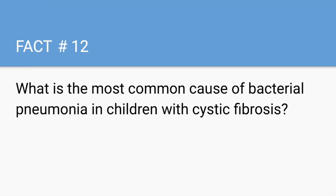What is the most common cause of bacterial pneumonia in children with cystic fibrosis? Cystic fibrosis is highly tested in many ways. Remember that Pseudomonas is the most common cause of bacterial pneumonia in adults with cystic fibrosis, usually treated with ciprofloxacin. However, for children with cystic fibrosis, the most common cause is Staph aureus, which is treated with vancomycin.